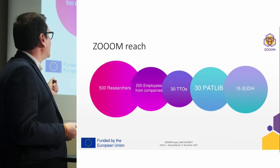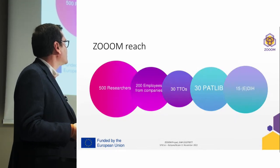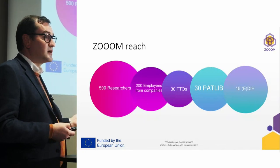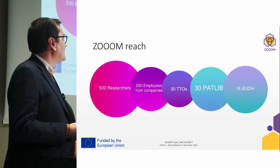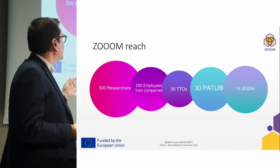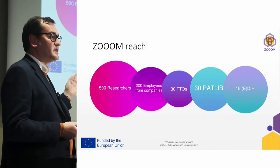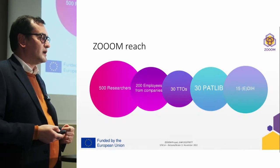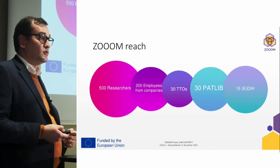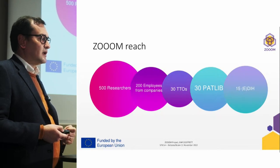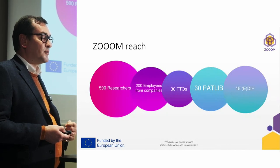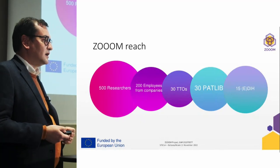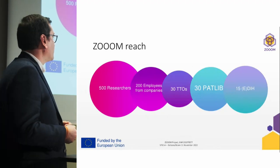The project objectives: we will reach 500 researchers, 200 employees from companies, 30 TTOs, 30 Patlibs, and 15 DIHs. The largest number is researchers, but we also want to involve companies because, as we all know, companies are large contributors of open software. In particular, we had as an input a report from the Commission stating that small and medium enterprises are great contributors in large quantity to the development of open software.